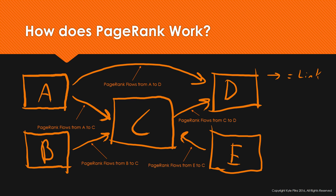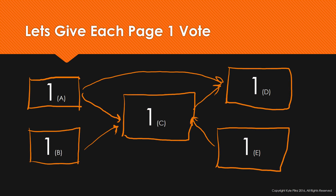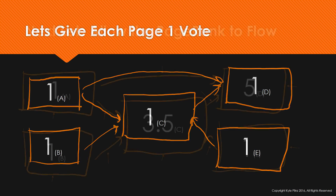We're going to assign all of these a value of 1 — give each one one vote, or one point, to do whatever they want with. Then we're going to distribute that one vote across all of the pages they want to vote for. The PageRank algorithm treats links like votes, and you only have one vote, so you have to split that vote up amongst all of the links you have.